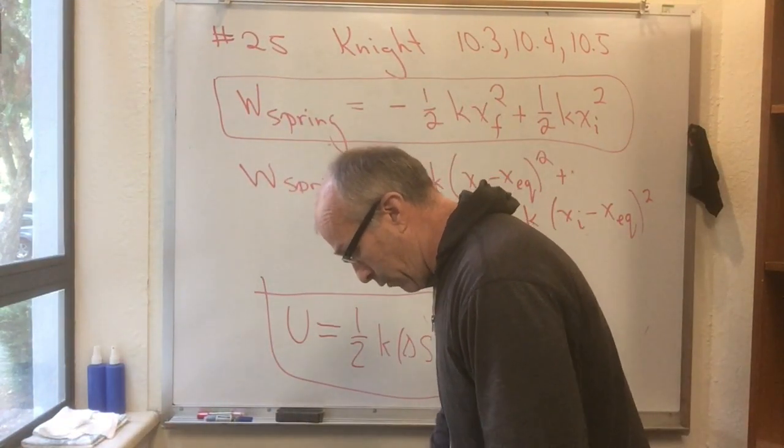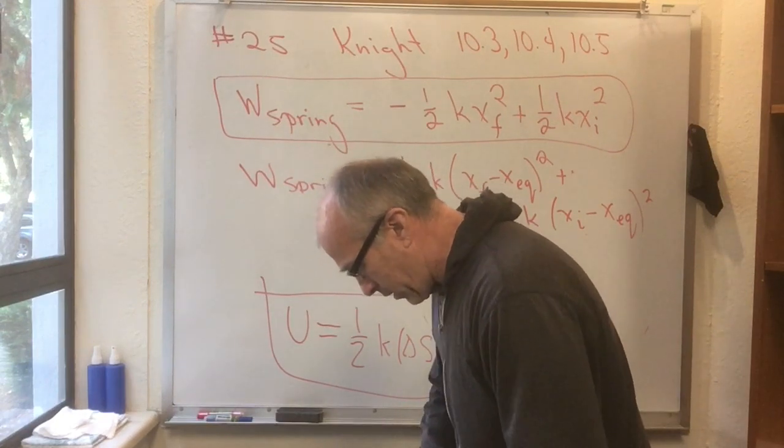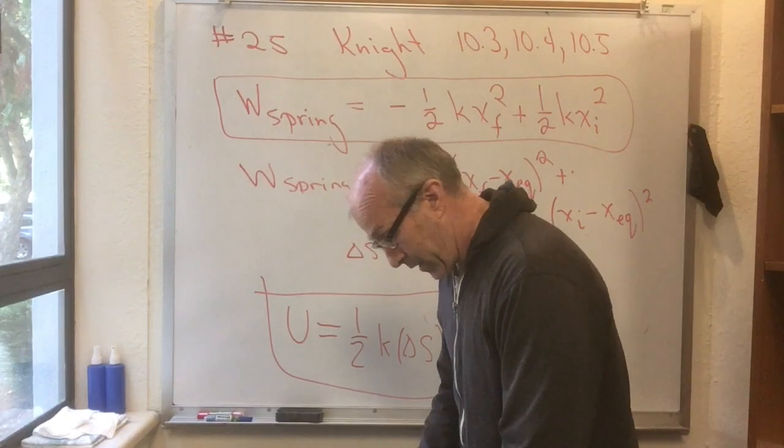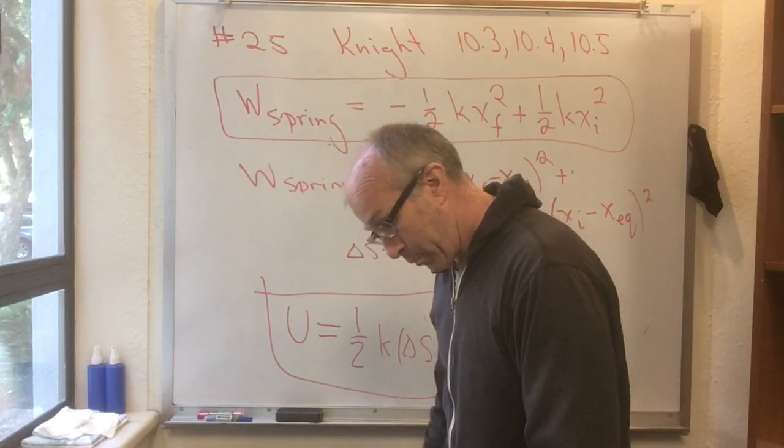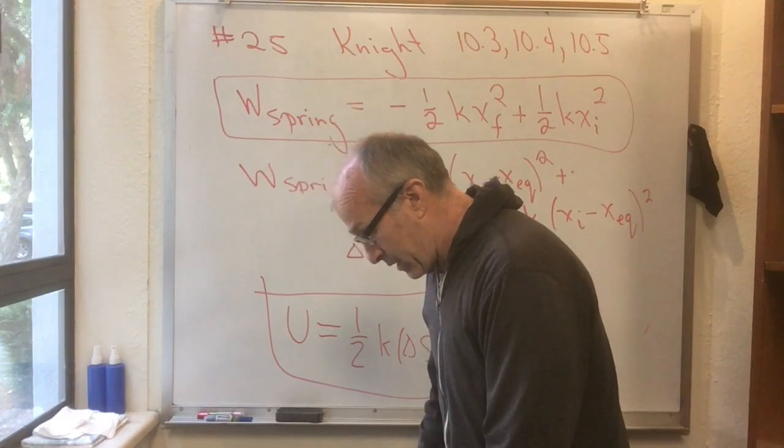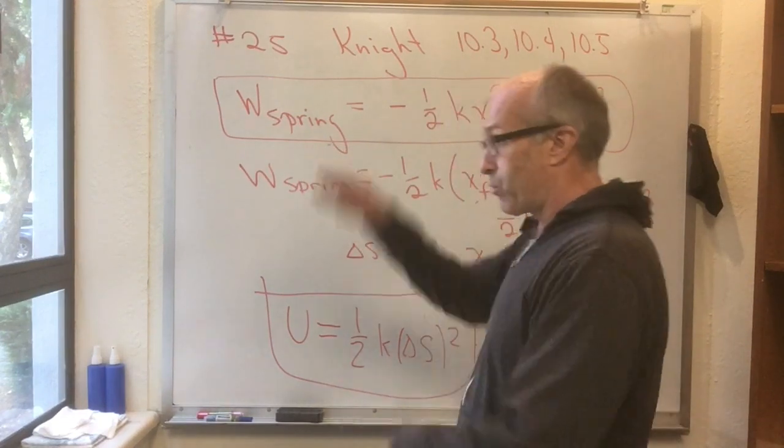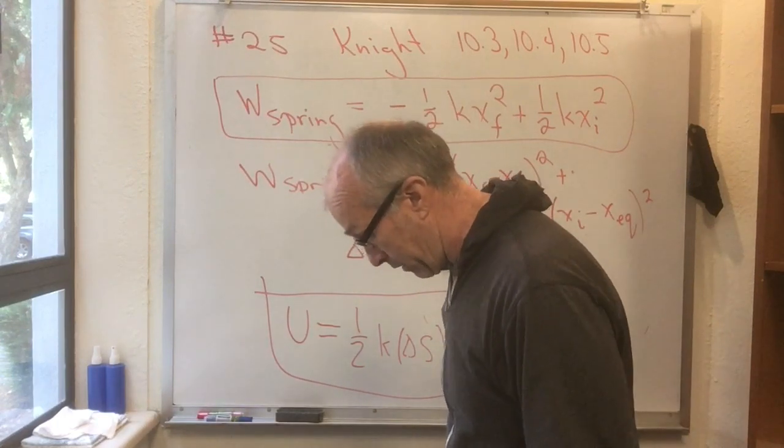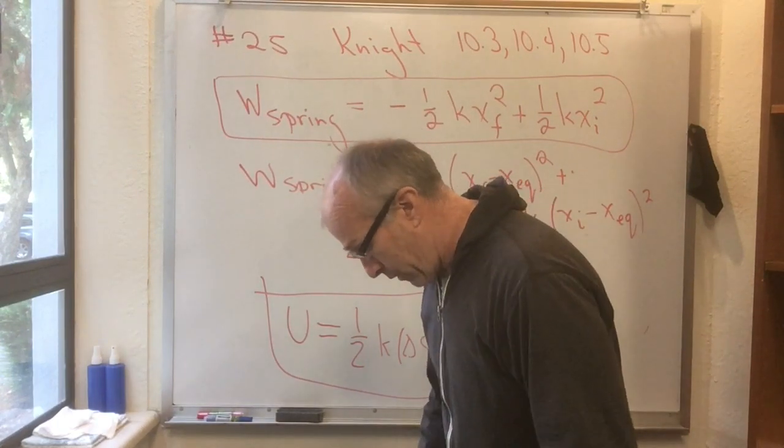Now let's go on to 10-4 and 10-5. Those will be even easier because 10-4 was this discussion of conservation of energy. And I've already done plenty of that in class. And 10-5 is this business of energy diagrams where you just draw these bar charts that show how the energy is flowing back and forth between kinetic and potential energy. And we've already done that.